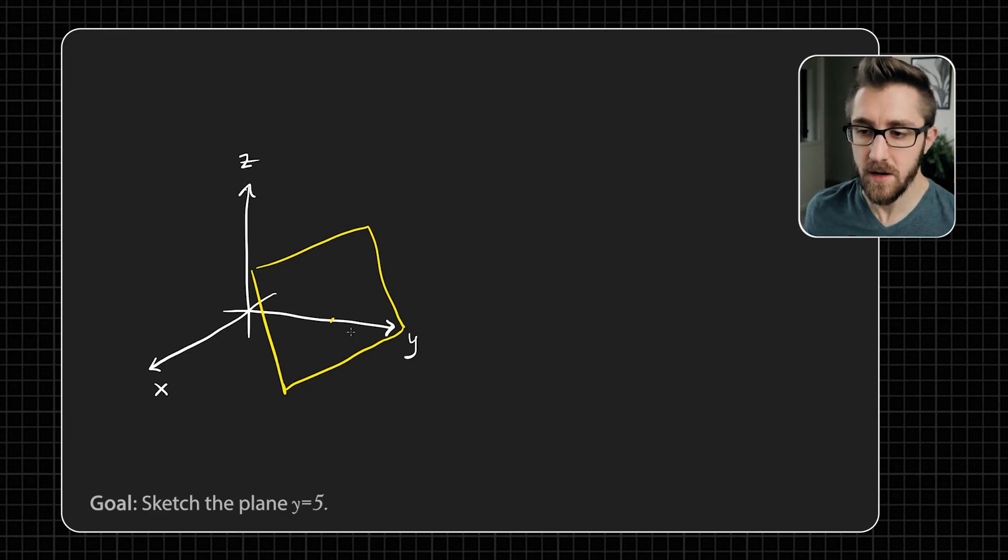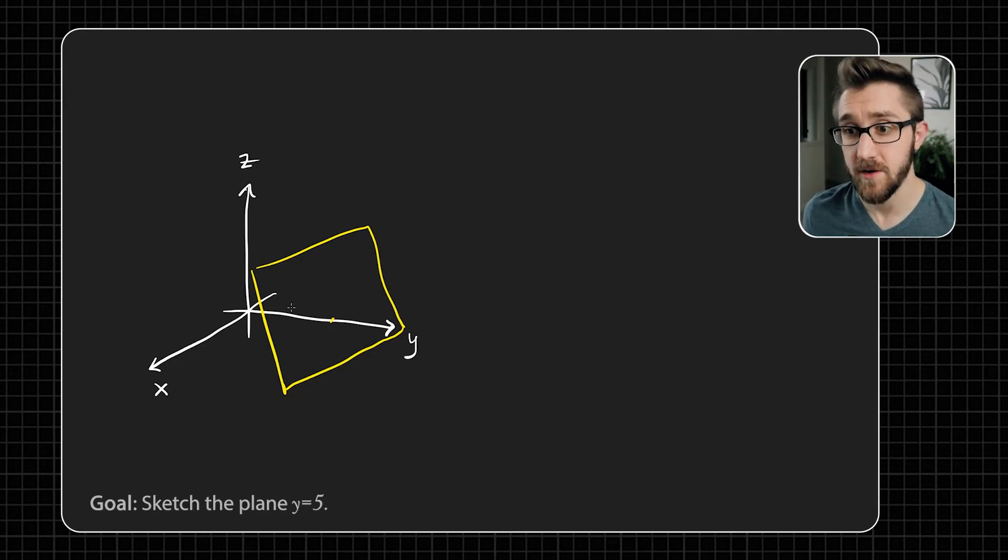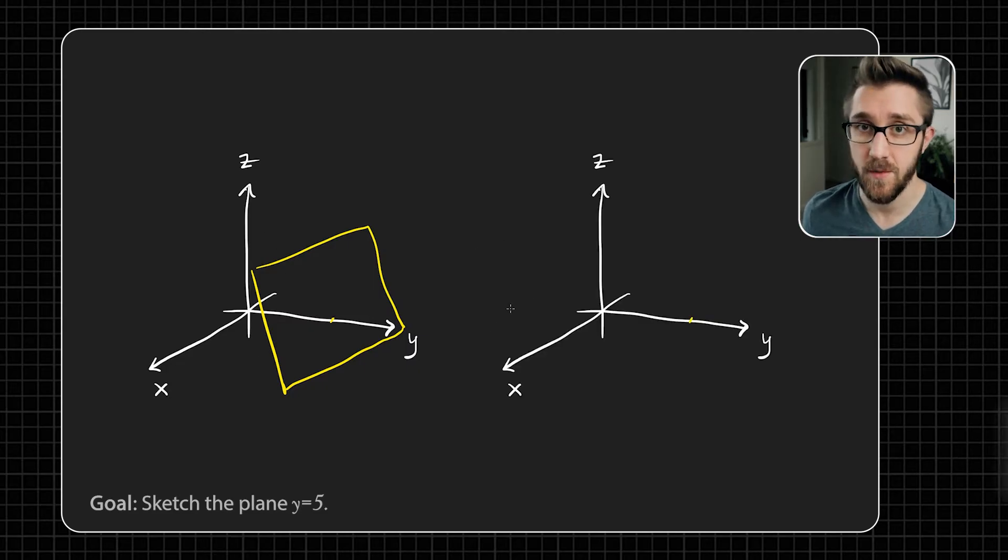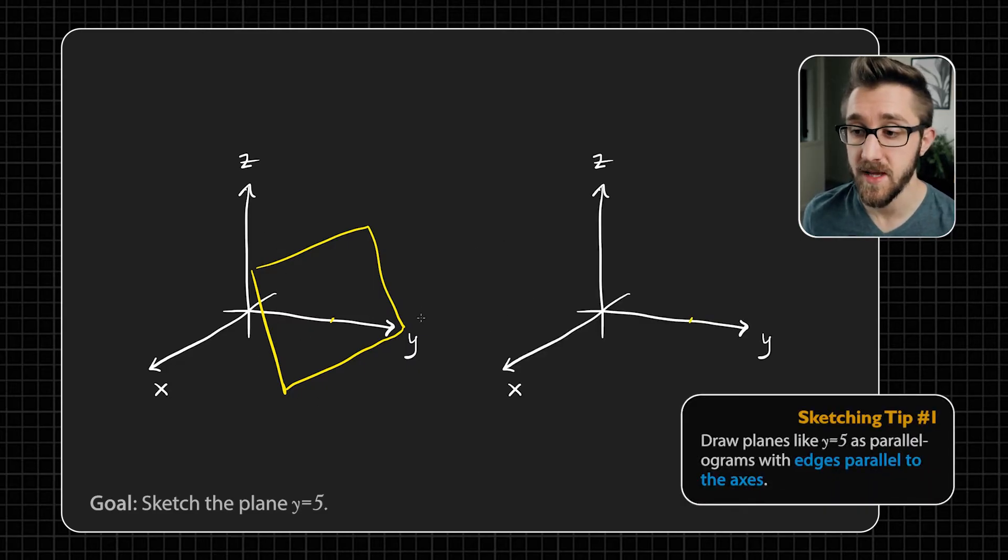And so you might say, why don't we just draw a rectangle that is sort of centered around this point, sort of like this. And this is okay, it's not terrible. But it's hard to see that this rectangle that you've drawn here is actually in a plane that is parallel to the XZ plane.